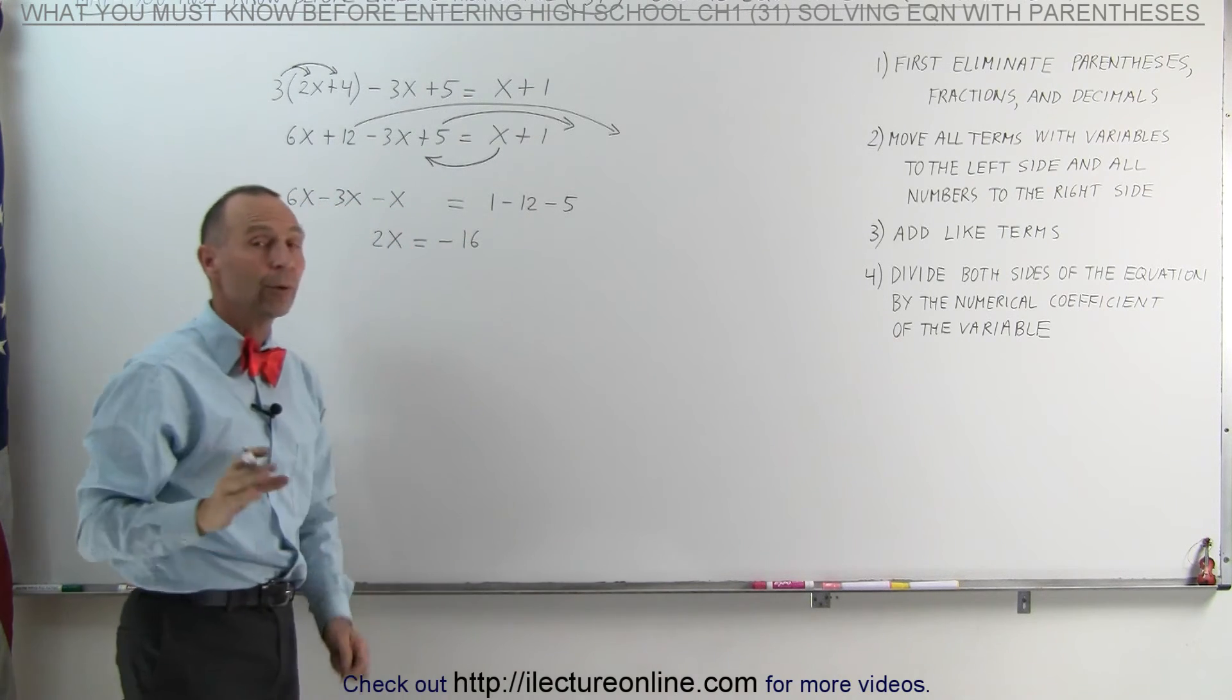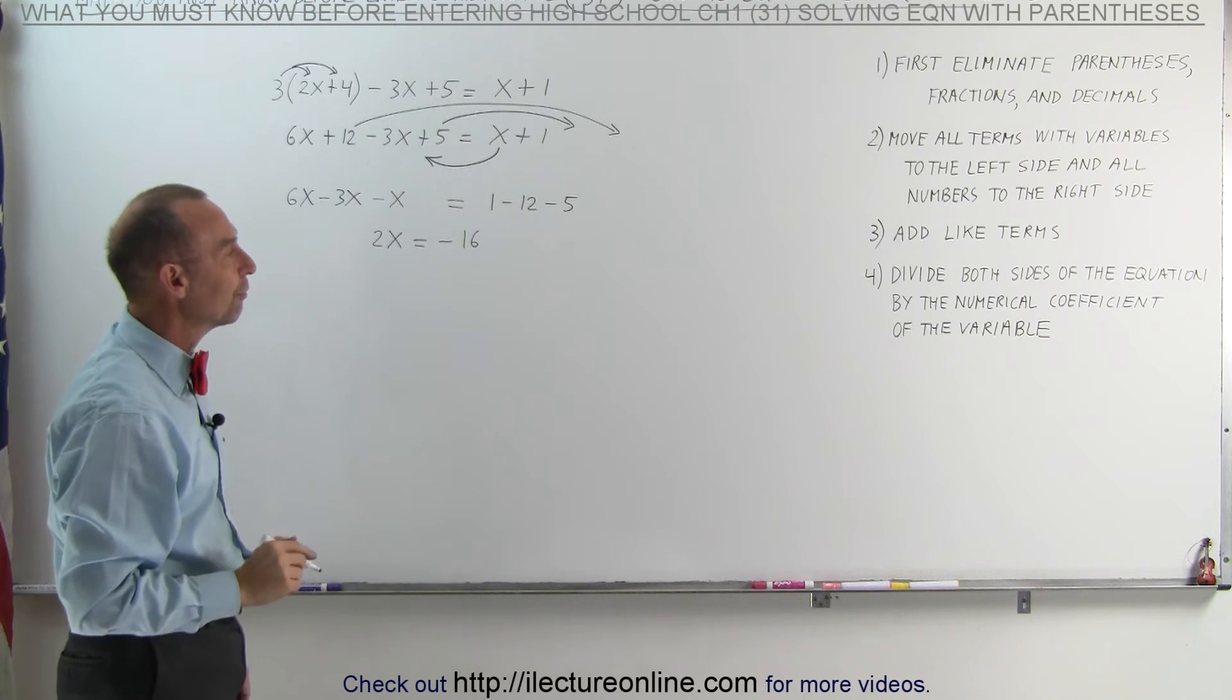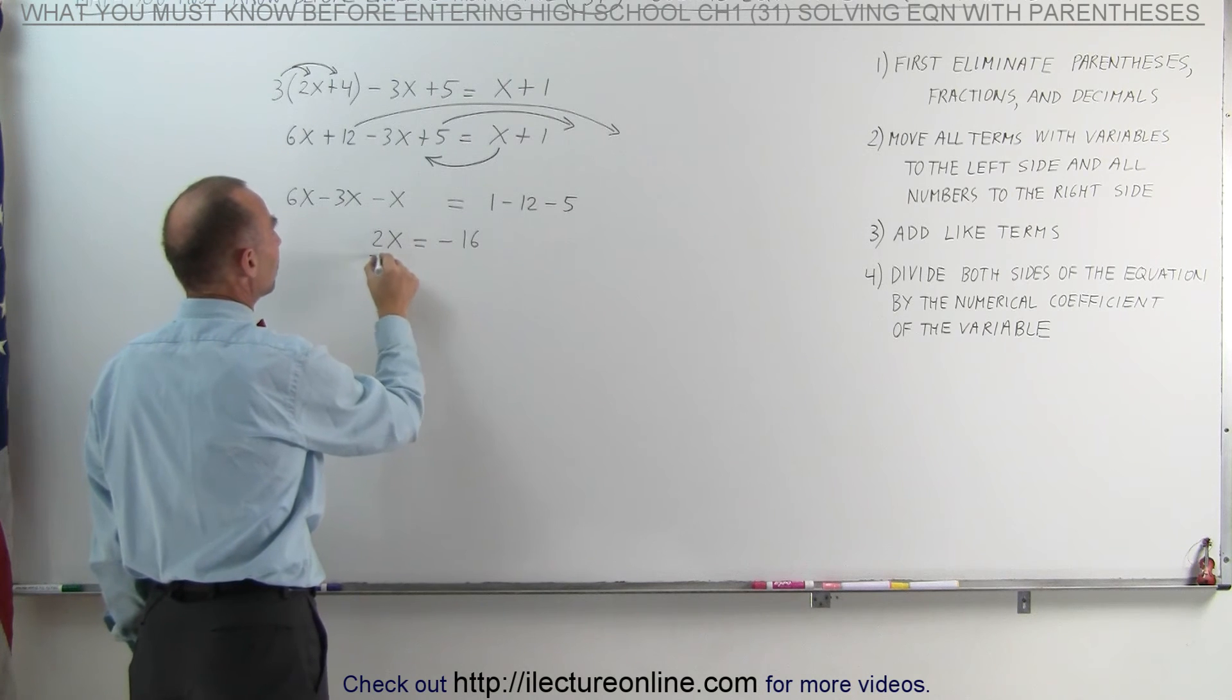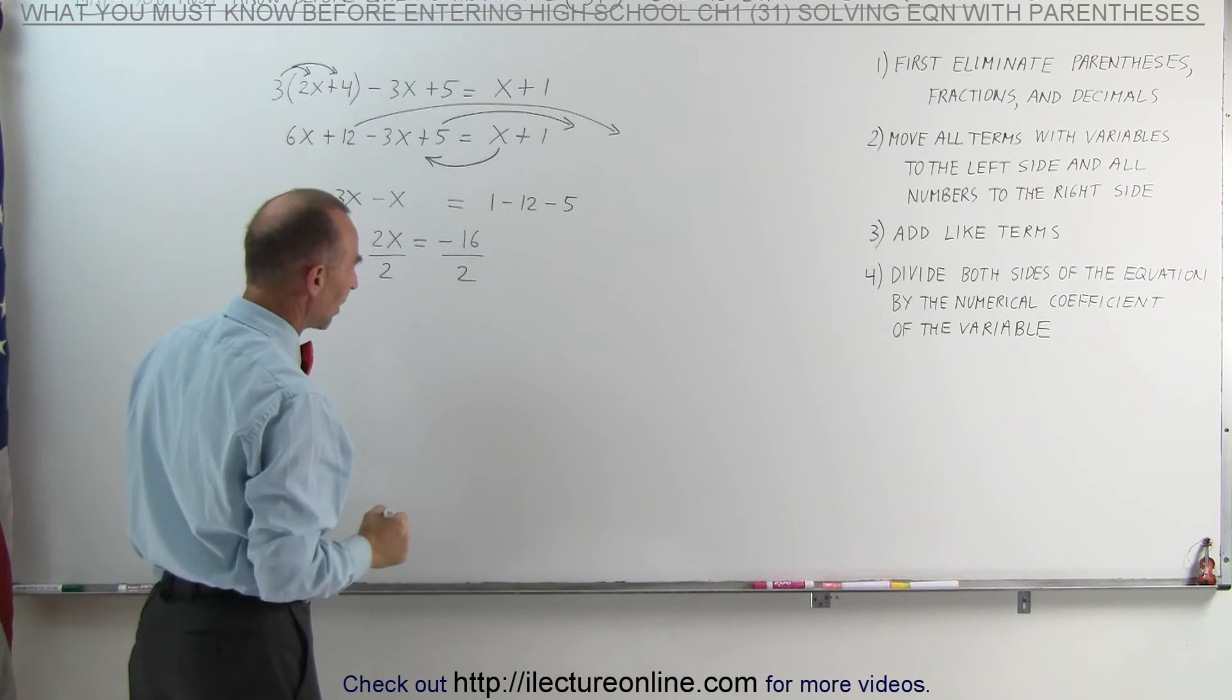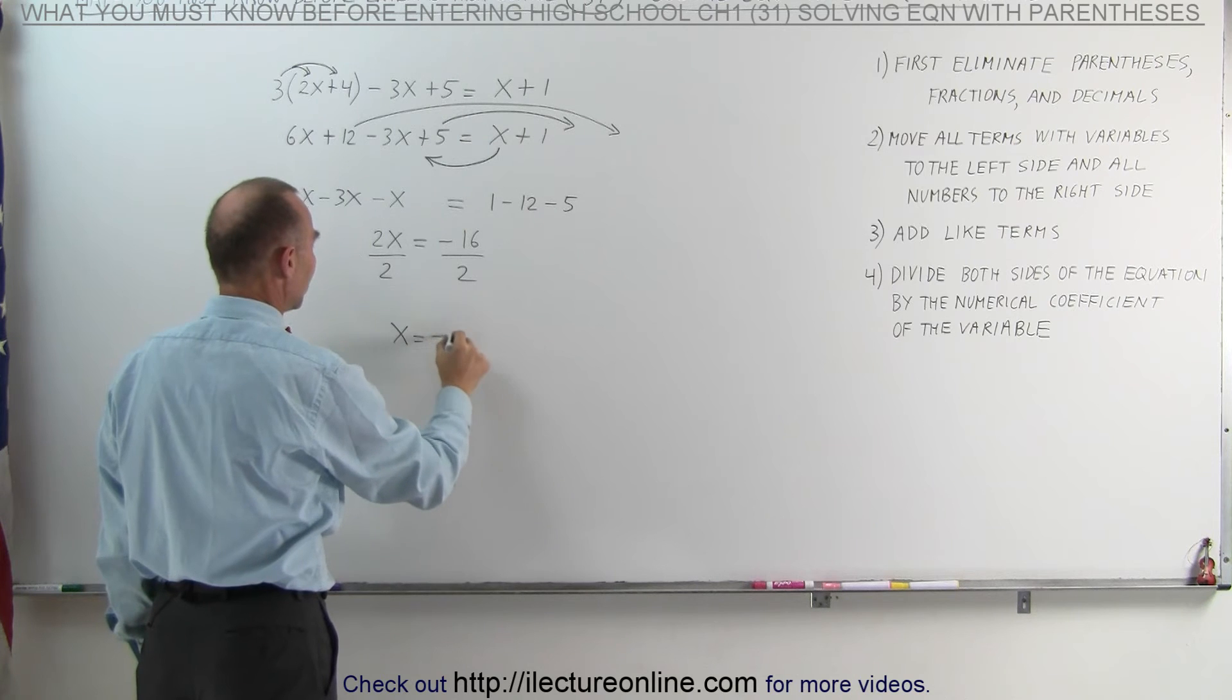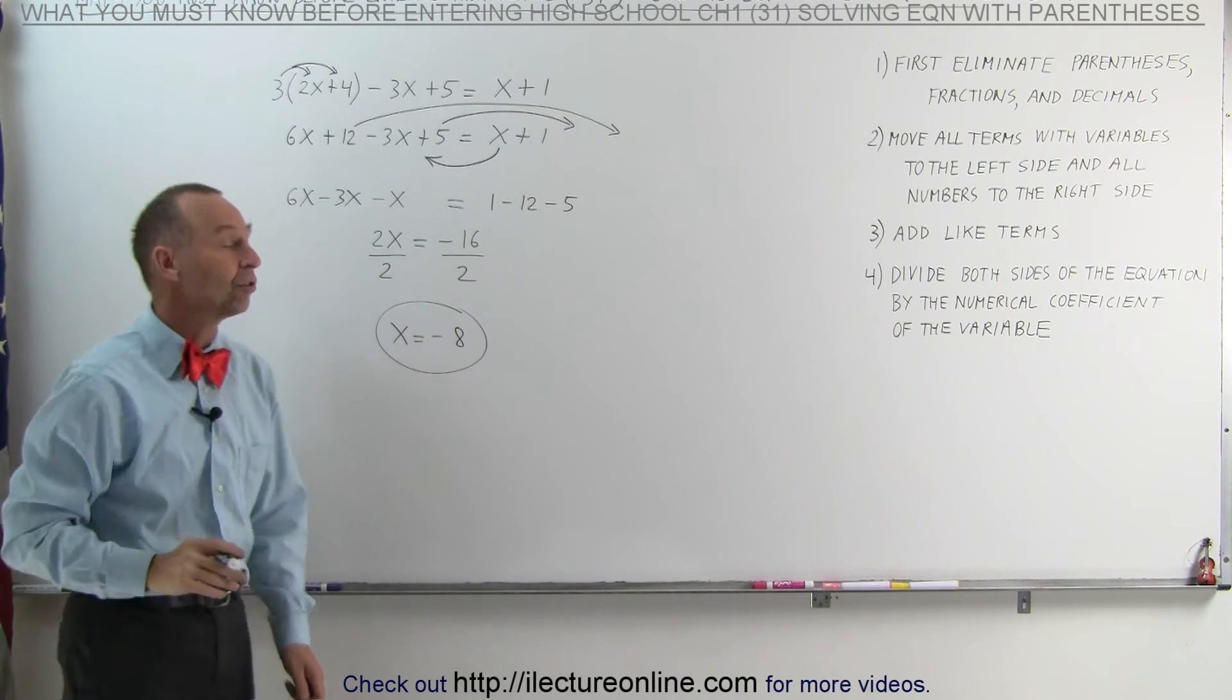The last step is we're going to divide both sides of the equation by the numerical coefficient of the variable. In this case, that would be the number 2, which means we're going to divide the left side by 2, and we're going to divide the right side by 2. The 2's cancel out. We end up with x is equal to minus 16 divided by 2 is minus 8. And that's how we solve the equation.